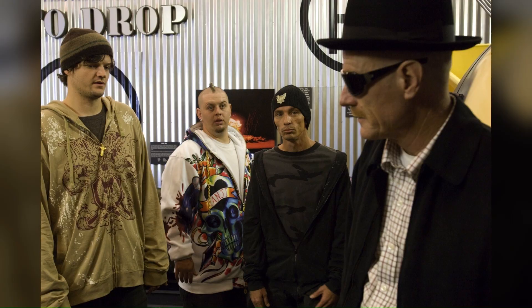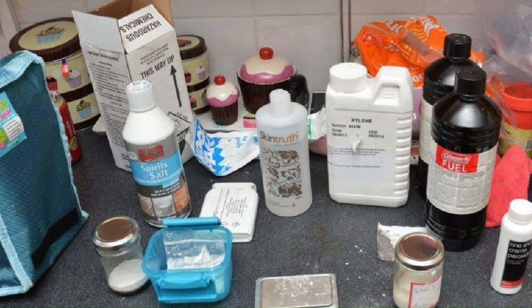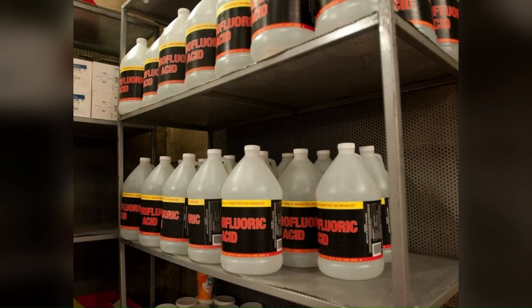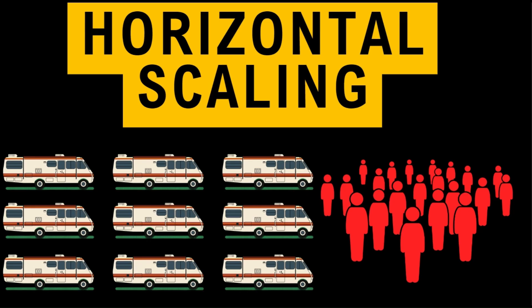So what are the two options Walter White and Jesse Pinkman have? Option one: they hire more people, buy a bunch more RVs, buy more ingredients, put them all simultaneously side by side, and keep them all up and running — continuously pumping out product. This is horizontal scaling.